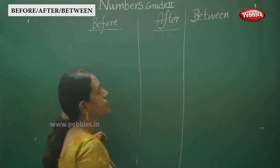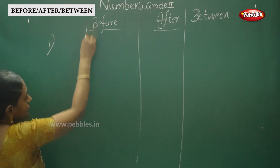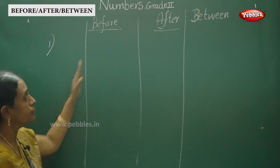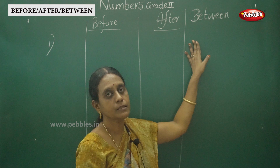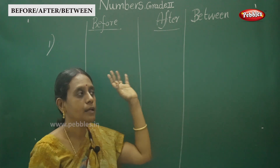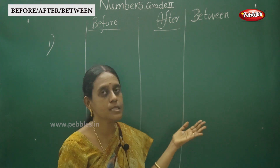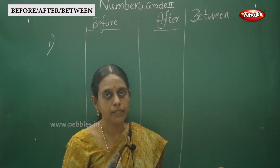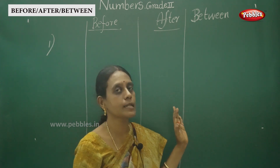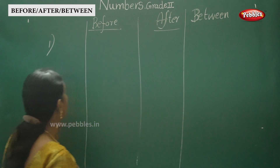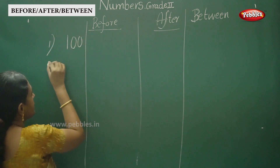You are going to write what comes before and after the next number, and between two given numbers. For example, if you have 10 and 15, what numbers come between 10 and 15? That would be 11, 12, 13, 14. Now we have to write three-digit numbers.